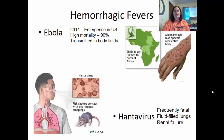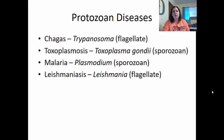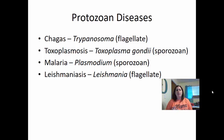Protozoan diseases of the cardiovascular and lymphatic system include Chagas' disease caused by Trypanosoma, a flagellate; toxoplasmosis caused by Toxoplasma gondii, a sporozoan; malaria caused by Plasmodium, a sporozoan; and leishmaniasis caused by Leishmania, a flagellate. All of these have very complex life cycles.